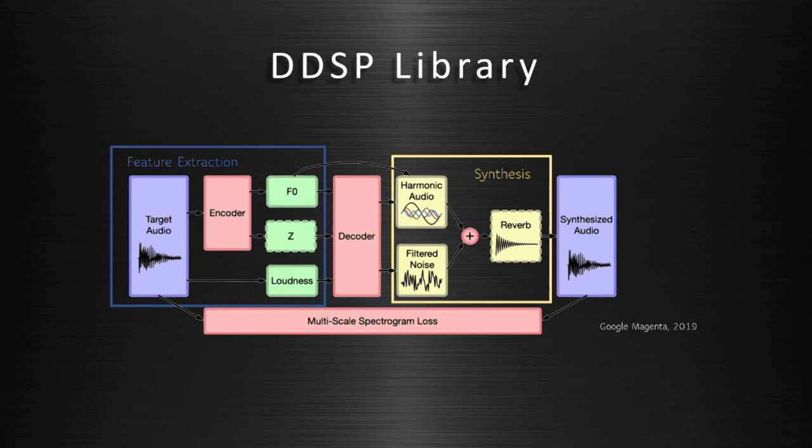In timbre transfer, we can extract pitch and loudness from any monophonic melody, and we can use a decoder that was pre-trained on, for example, a violin or a flute, to reconstruct our original melody played on the instrument that the decoder was trained on.